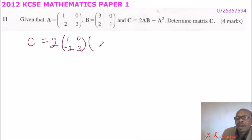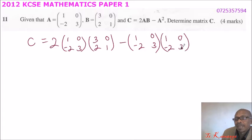Times matrix B (3, 0; 2, 1), minus A squared which is (1, 0; -2, 3) times another A (1, 0; -2, 3).